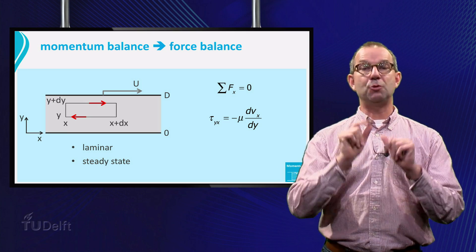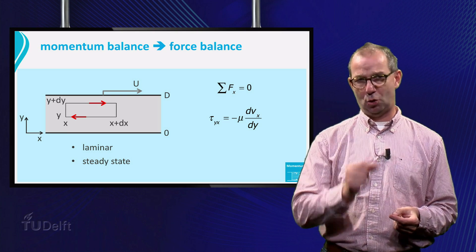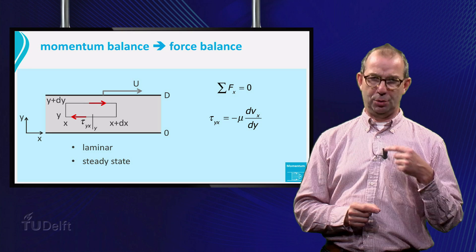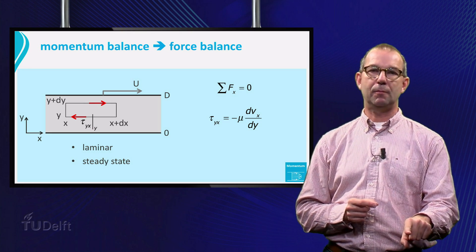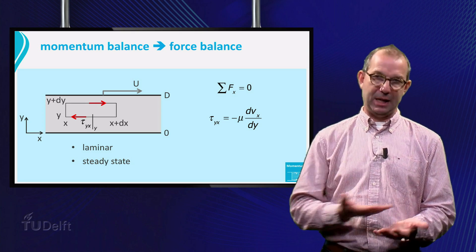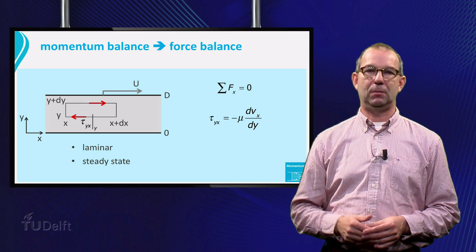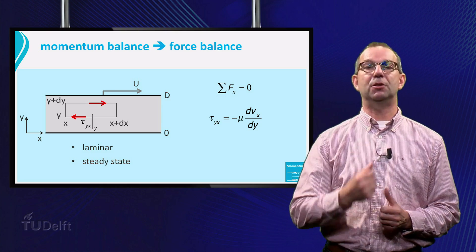If we apply that to our situation, we see that at the bottom, that is at coordinate y, the layer beneath the control volume exerts a shear tau yx at coordinate y. We get the force by multiplying the shear stress by the area on which it is acting. That is w dx, with w the width of the plate, perpendicular to the sheet of drawing.